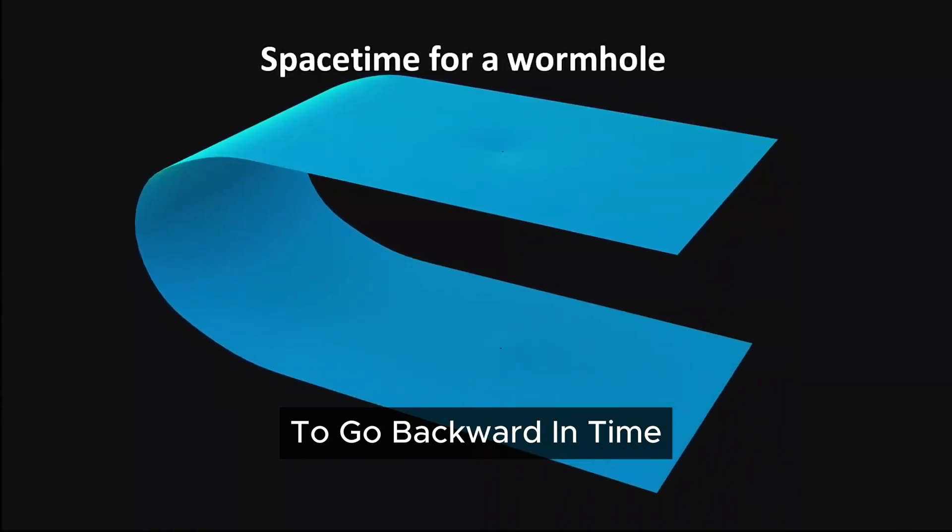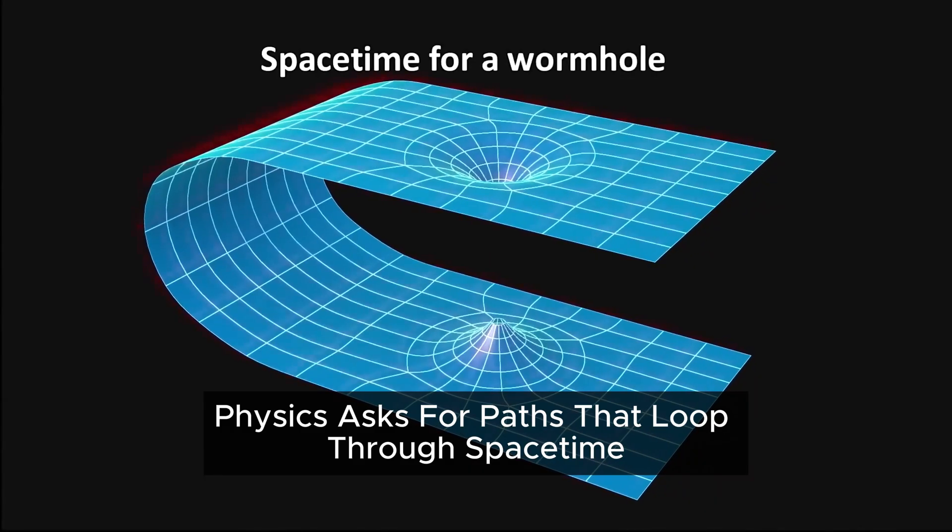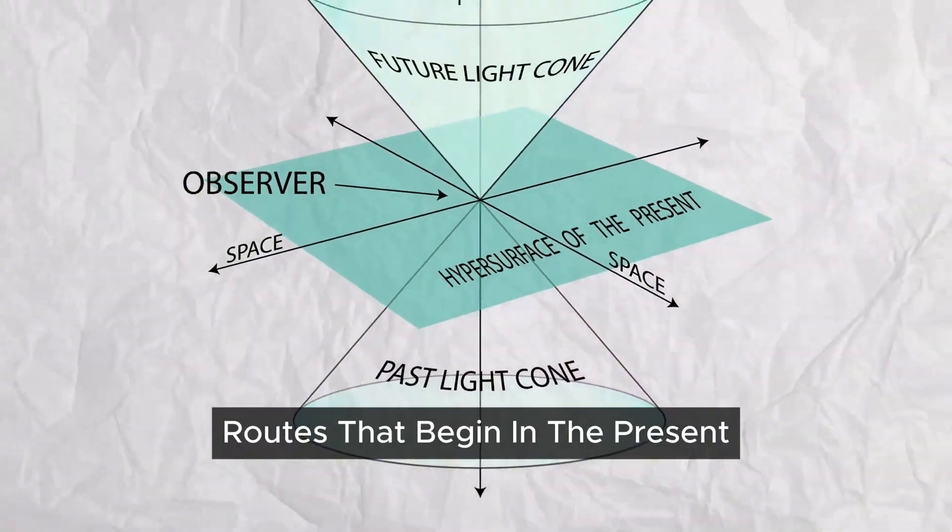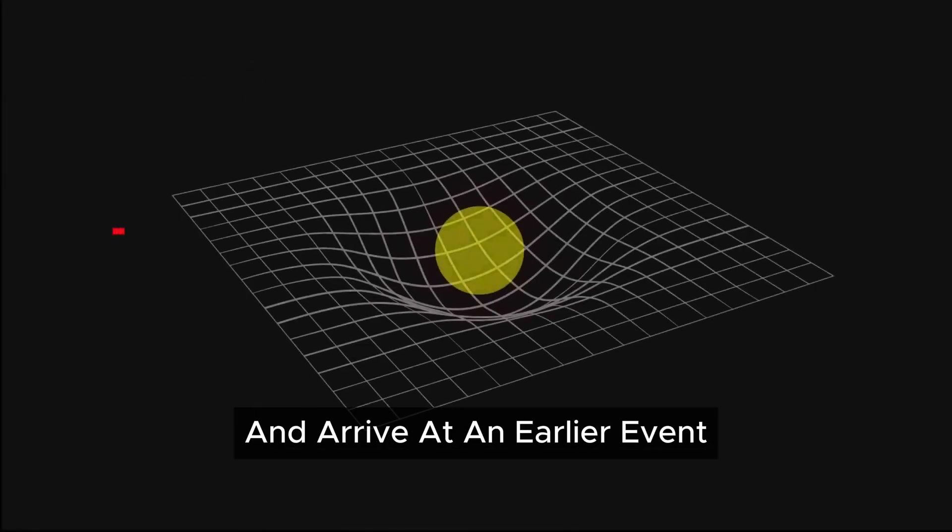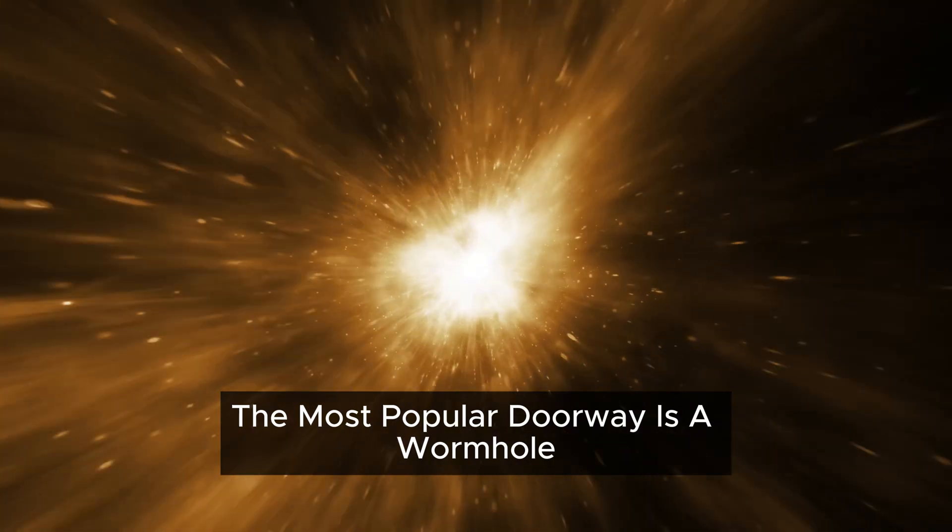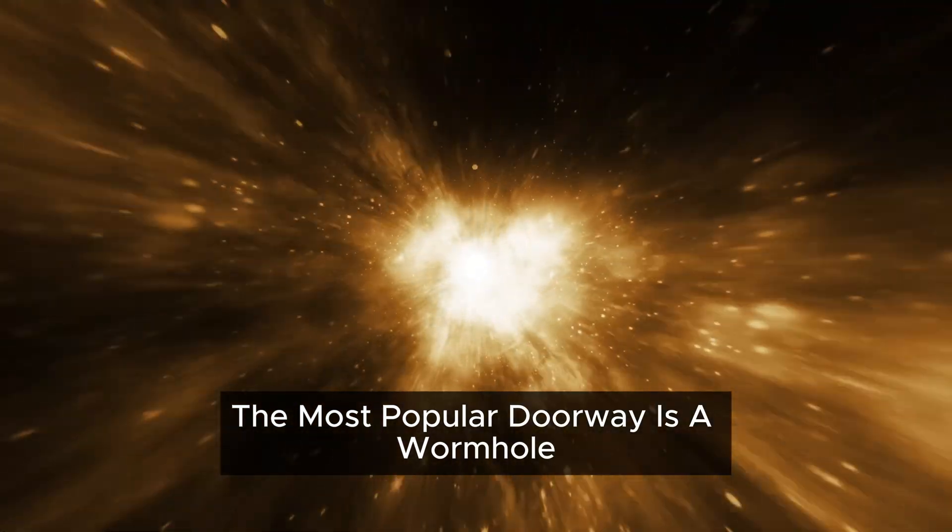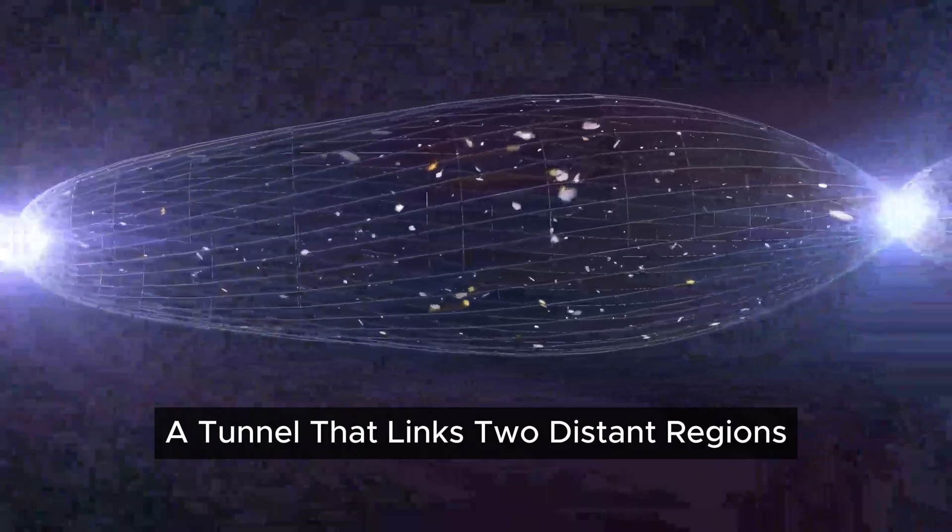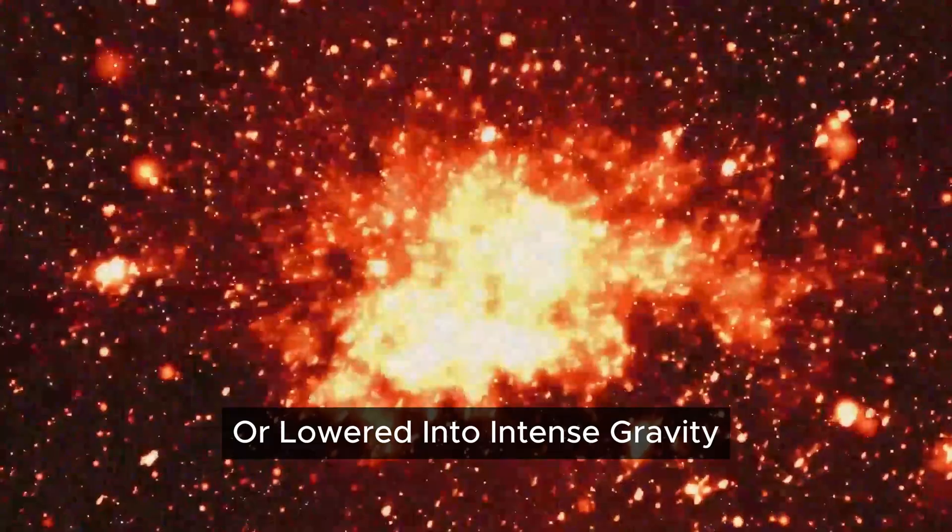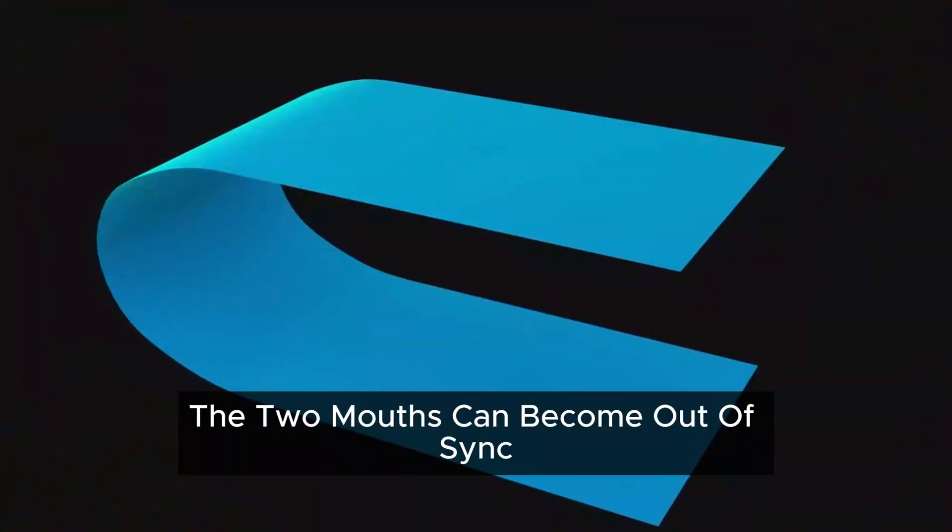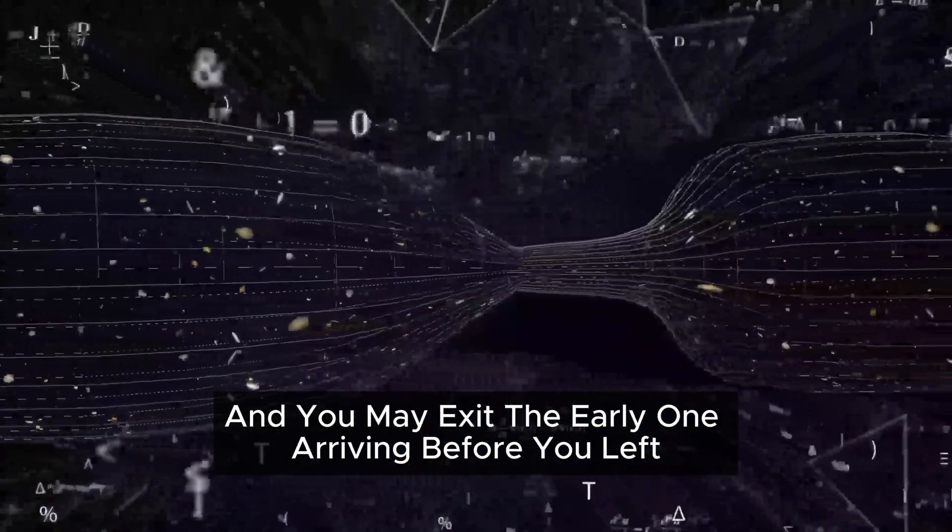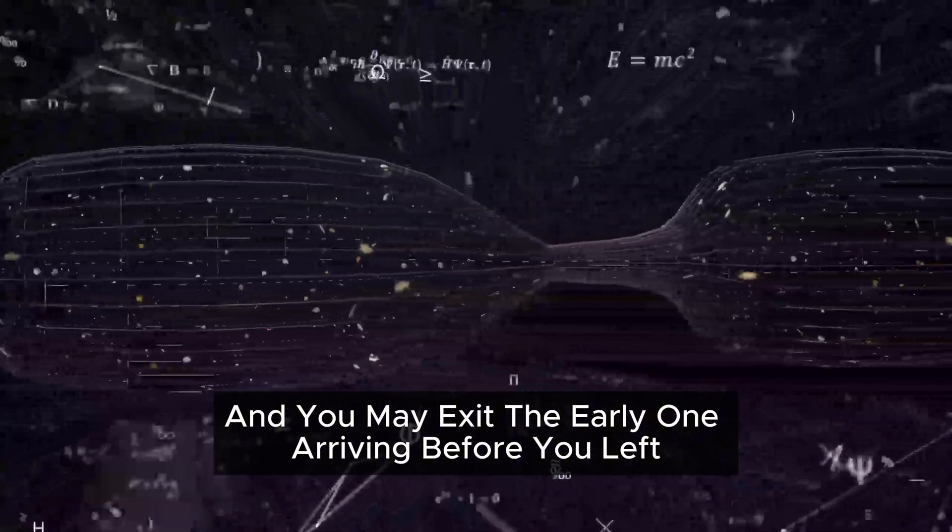To go backward in time, physics asks for paths that loop through space-time. These are called closed time-like curves, routes that begin in the present and arrive at an earlier event without ever exceeding light speed locally. The most popular doorway is a wormhole, a tunnel that links two distant regions. If one mouth is accelerated or lowered into intense gravity and then brought back, the two mouths can become out of sync. Step in through the late mouth and you may exit the early one, arriving before you left.